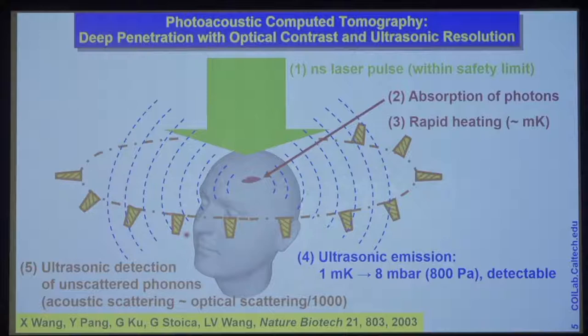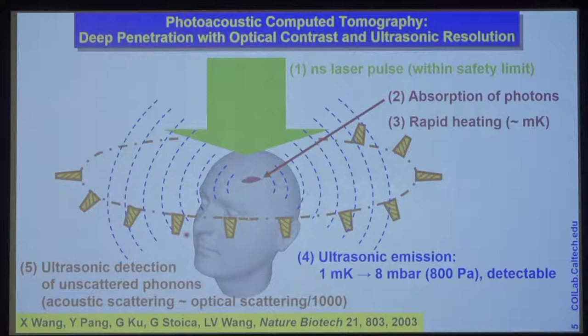In 2003, we published the first functional photoacoustic images, also the first in vivo images. In small animals, we can see brain activation by wiggling one side of the whiskers — the contralateral side of the brain was hemodynamically activated. Those images were non-invasively acquired.